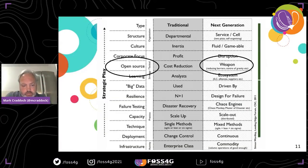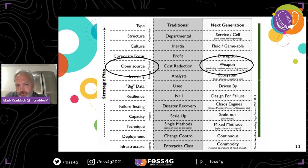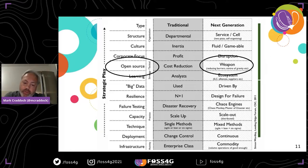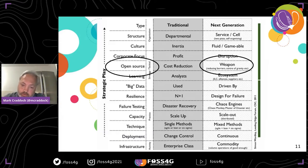One of the things about Wardley Mapping is a section about how businesses operate. In the middle column, this is how traditional organizations operate: departmental structures, culture suffers from inertia, corporate focus is on profit, open source is about cost reduction, learning is through analysts. Next-generation organizations — like Amazon — see open source as a weapon. They have a better strategic understanding of open source and how it impacts their value chain, making better decisions about when to use it and how to support it.